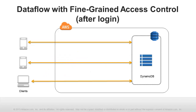Now here's how access control works in a similar application built using fine-grained access control. After being authenticated by an identity provider, each client makes requests directly of DynamoDB, and fine-grained policies govern whether each request is allowed or denied. Fine-grained access control is designed to allow you to keep users' data secure with significantly less development overhead, management overhead, and cost.